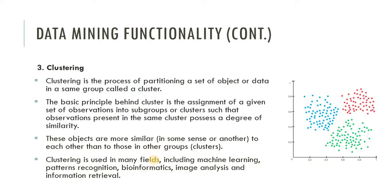Clustering is a process of partitioning a set of objects or data into the same group, called a cluster. The basic principle behind clustering is the assignment of a given set of observations into subgroups such that observations in the same cluster possess a degree of similarity — these objects are more similar to each other than those in other groups. Clustering is used in many fields including machine learning, pattern recognition, bioinformatics, image analysis, and information retrieval.